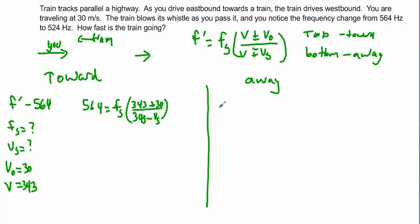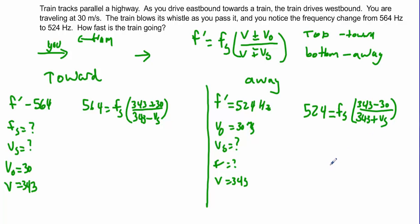Now we're going to jump over to the away side. The frequency has decreased to 524 Hz. Our velocity has not changed, the velocity of the observer is still 30 meters per second. We're assuming the velocity of the source has not changed. But sound still moves at 343 meters per second. So same equation but different numbers. 524 equals frequency of the source times 343 minus 30 over 343 plus the velocity of the source.